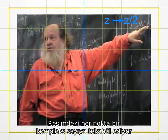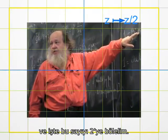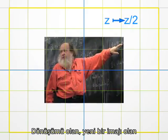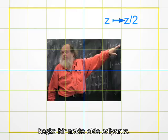Each point on the photo corresponds to a complex number Z that's divided by 2. We get another point, its image by the transformation, hence a new picture.